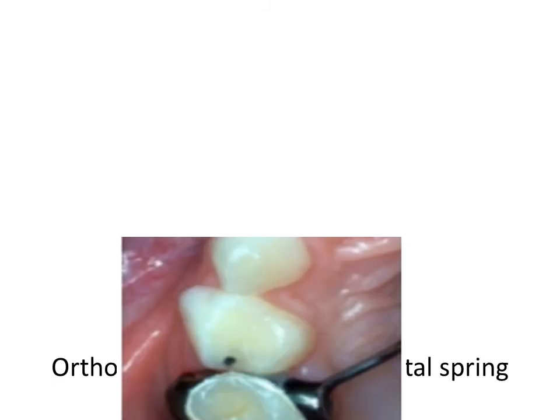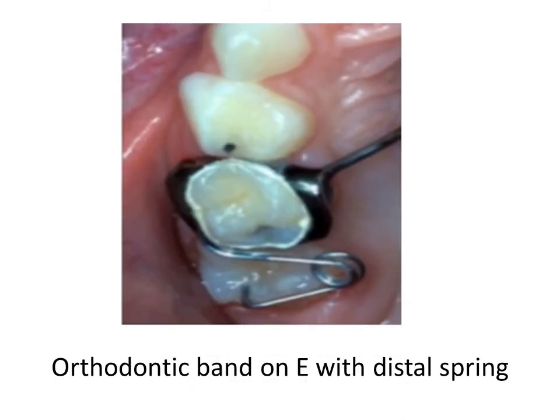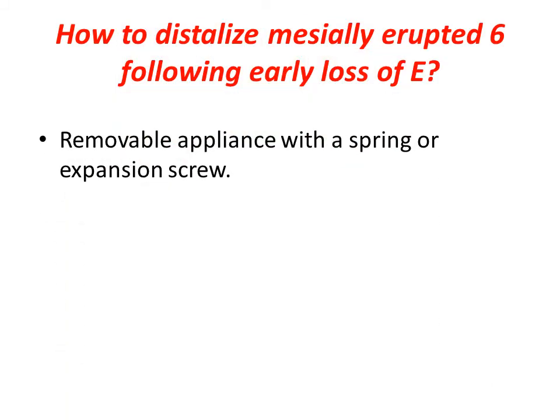The use of an orthodontic band on the E with a distal spring to distalize the ectopically erupted sixth. To distalize a mesially erupted sixth following early loss of the E, we can distalize it using one of these methods.